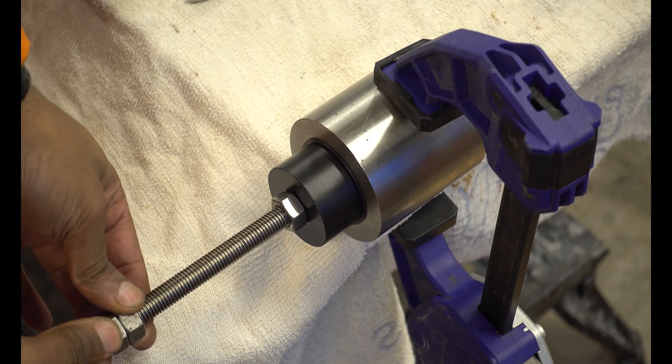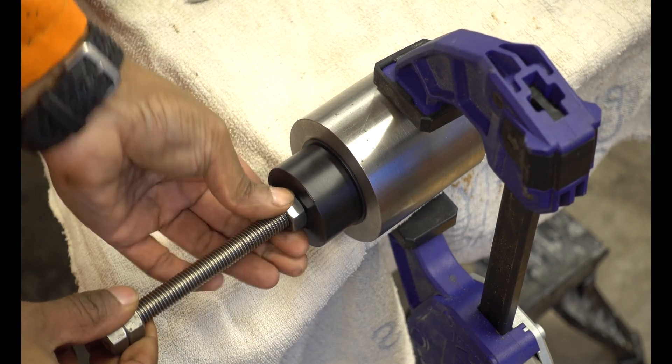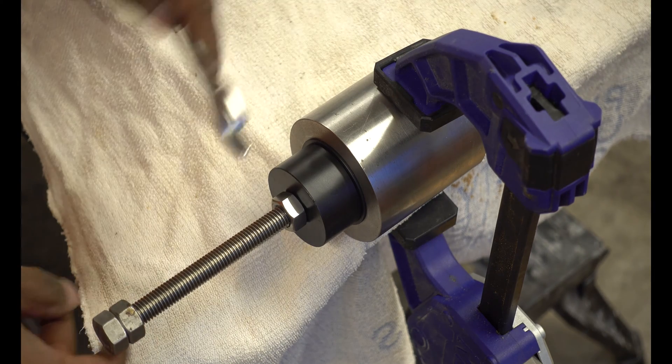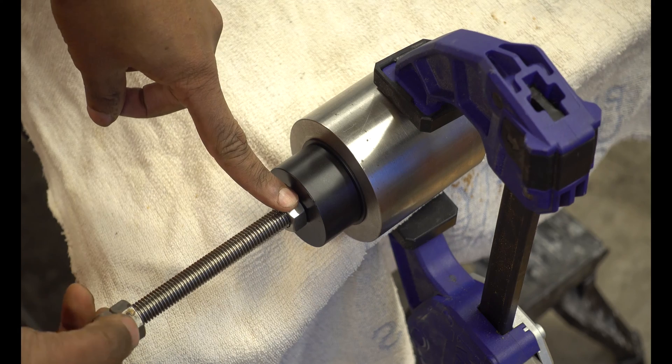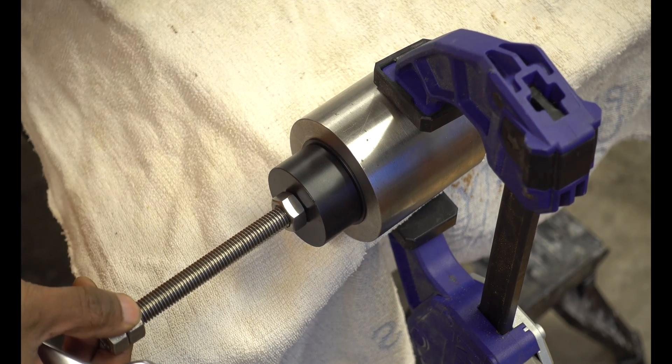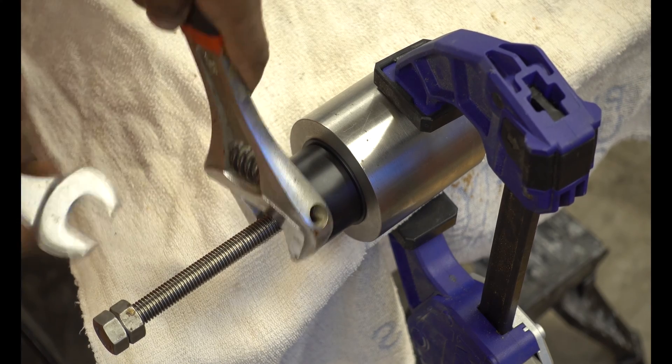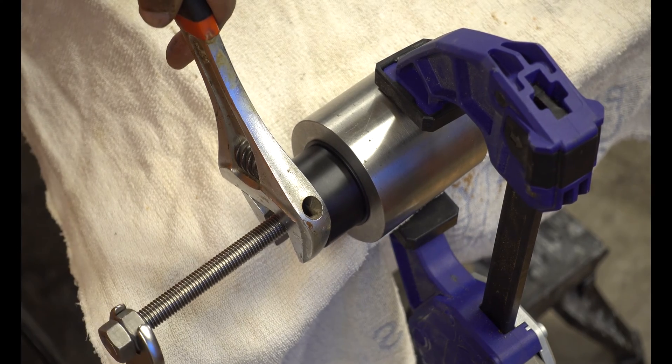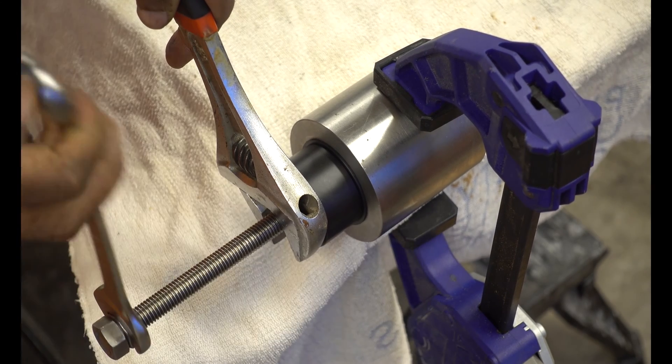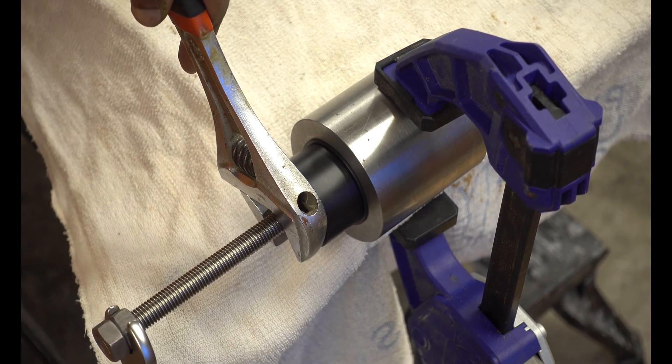This should already be a lock nut, so the two nuts are tightened up against each other. The preferred method is to hold this nut still and turn this second nut anti-clockwise. Like that. Now that's if your bearing is spinning.